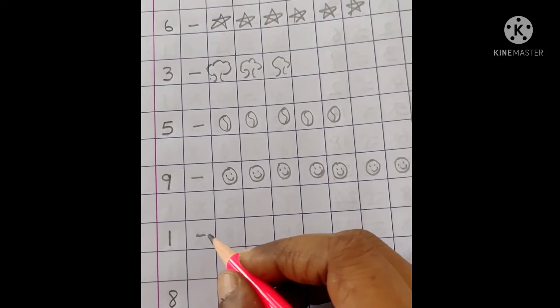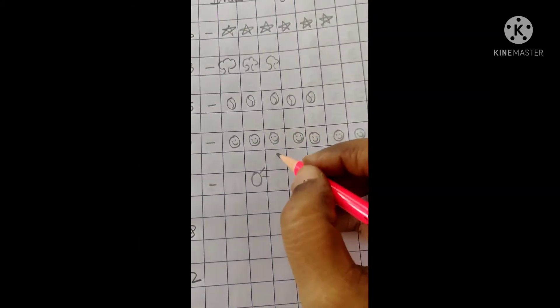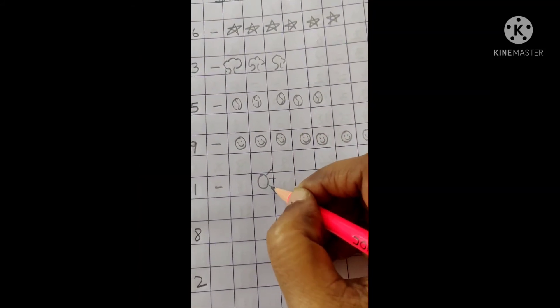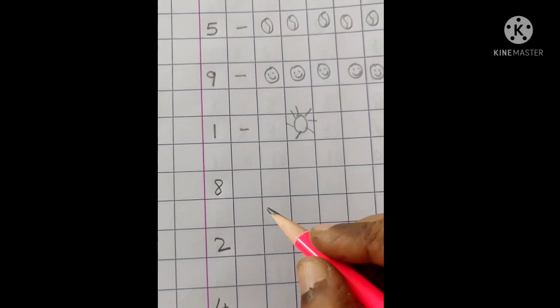Next, here is 1. Sun. Yes children, this is sun.